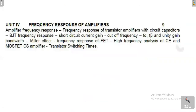First we will see what is frequency response of an amplifier, then we will analyze frequency response with respect to circuit capacitors. Then we will calculate the short circuit current gain, cutoff frequency, F-alpha, F-beta and their relationship, and unity gain cutoff frequency or gain bandwidth product. Then we will see the Miller effect — if some device is present between input and output, what is the effect at the input and output side. We will also see the frequency response of FET, high frequency analysis of common emitter amplifier, MOSFET common source amplifiers, and finally transistor switching times.